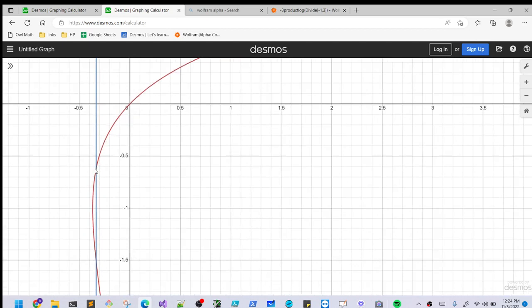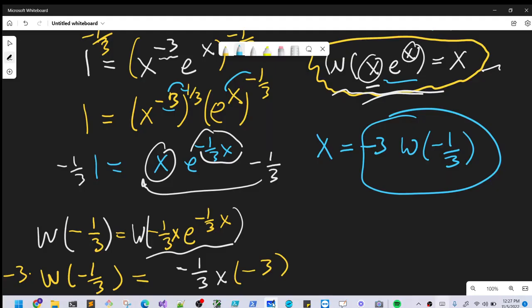So we have this solution here, but there's also another solution down here. We actually have two values for the Lambert W function. One is around -0.6191, and on the other branch, the negative one branch, we'll have -1.5121. So we end up with two real solutions for this exponential equation.